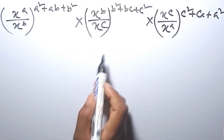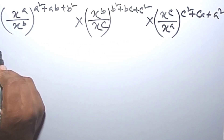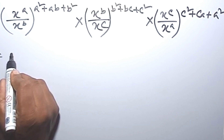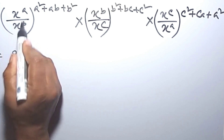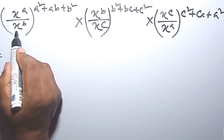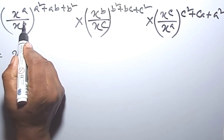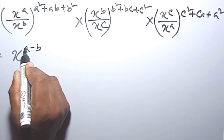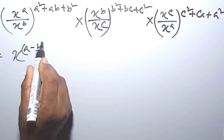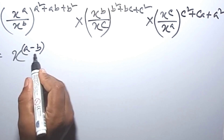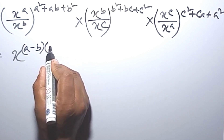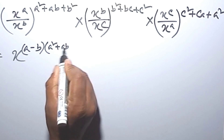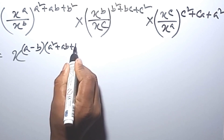Today we find the value of this. First, we can write x to the power of a minus b, multiplied by a squared plus ab plus b squared.